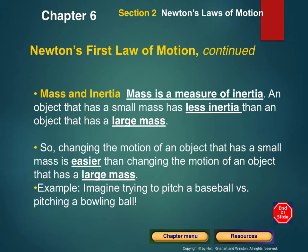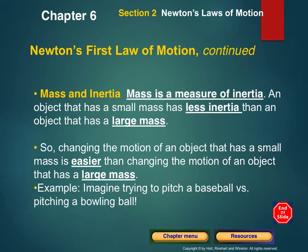The more mass something has, the more inertia it has, so it's easier to move something with less inertia. Think back to the lab question about a backpack — it's easier to accelerate with an empty backpack versus a full one because the empty backpack has less inertia and therefore resists your motion less. It's sort of common sense: it's easier to throw a baseball than a bowling ball because there's less mass in a baseball and therefore less inertia.